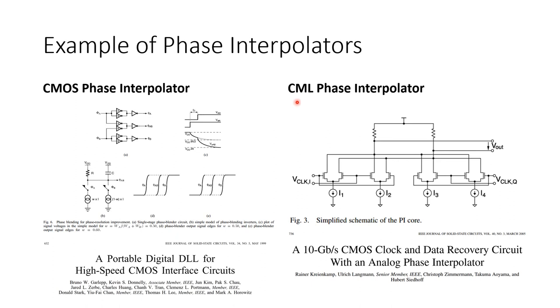Shown on the right is what's called a CML or Current Mode Logic phase interpolator. This one works on a little different principle. The input waveform is assumed to be a little bit more sinusoidal and an in-phase and quadrature clock, that is two clocks that are shifted by 90 degrees with respect to each other, are blended according to the values of these tail currents,